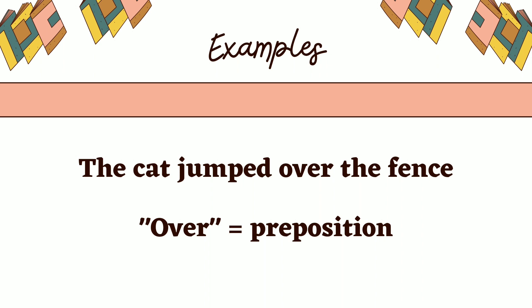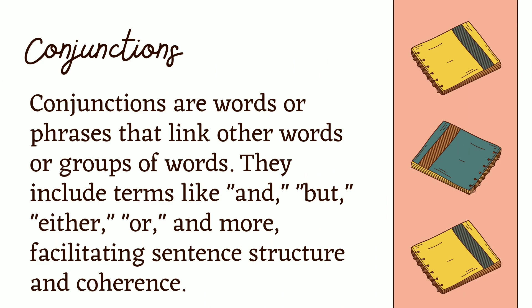Conjunctions are words or phrases that link other words or groups of words. They include terms like and, but, either, or, and more, facilitating sentence structure and coherence.